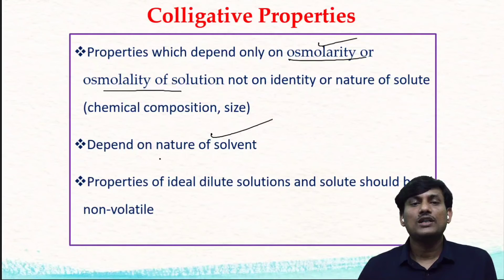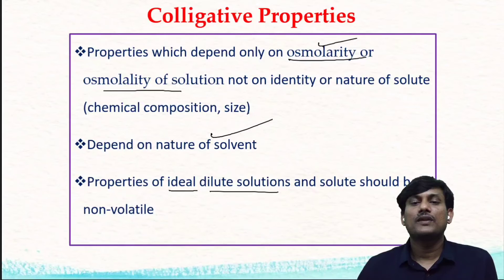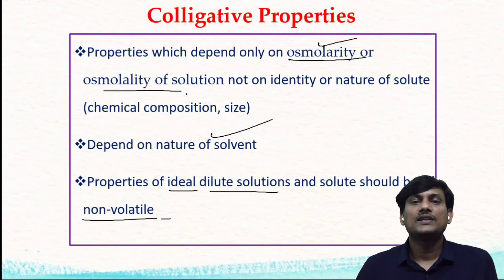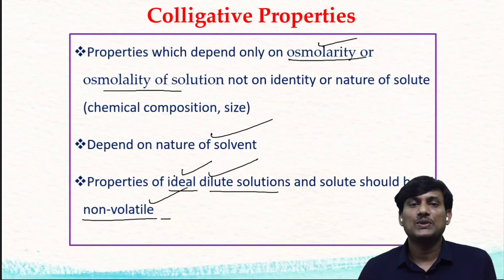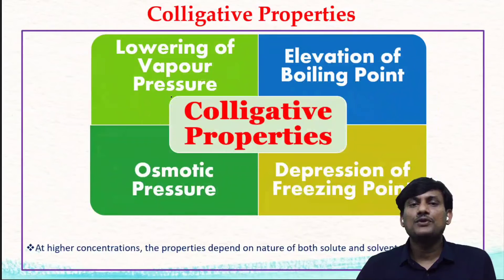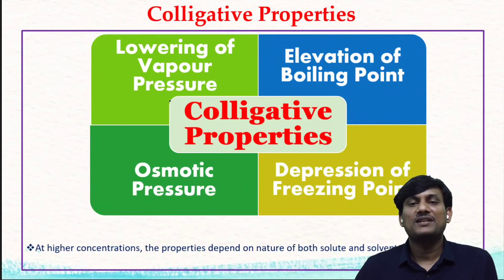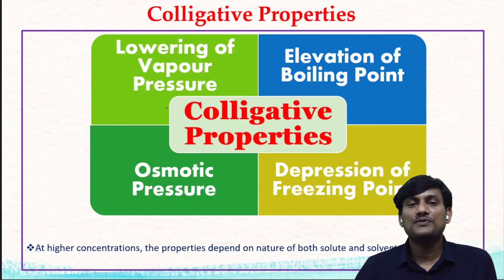Colligative properties are properties of ideal, dilute solutions that contain a non-volatile solute. These are the conditions: the solution should be ideal and dilute, and the solute should be non-volatile. The four colligative properties depend only on the number of solute particles, not on the size or chemical composition of the solute particles.